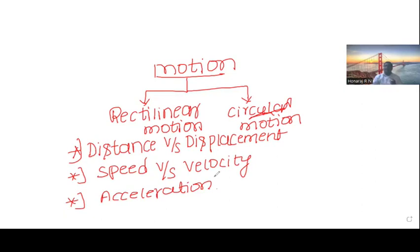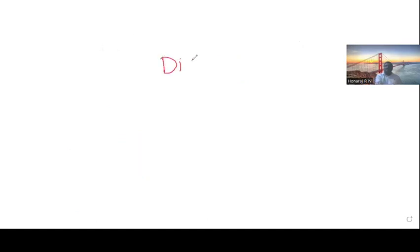Distance is nothing but path travelled by the object. Displacement is nothing but shortest path between initial and final position. If we consider two positions A and B, we have assumed three paths. One path from A to B, this is path 1, this is path 2.